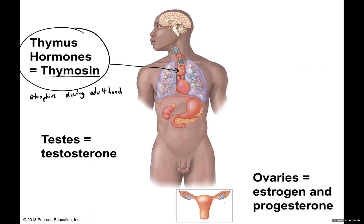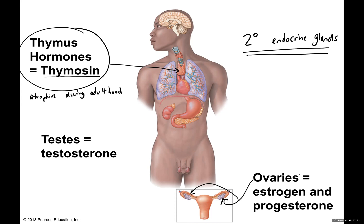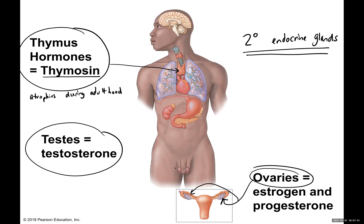The ovaries are located in female bodies and are secondary endocrine glands, meaning they have another primary job but also produce hormones. The ovaries produce estrogen and progesterone. In male bodies, the testes — that's the plural form — produce the hormone testosterone. And that should do us for our models. Stay tuned for some practice videos, and as always, take care of yourself and each other.